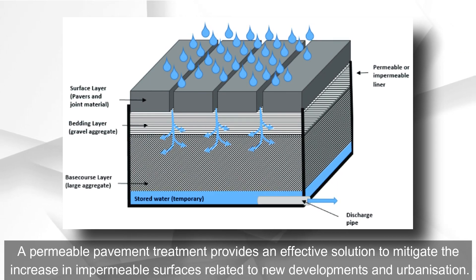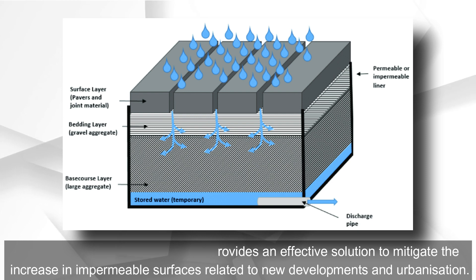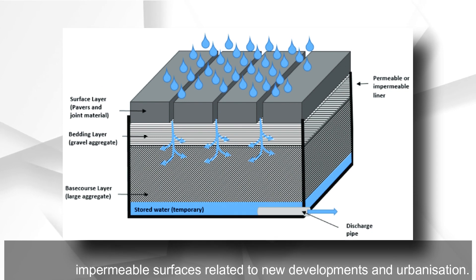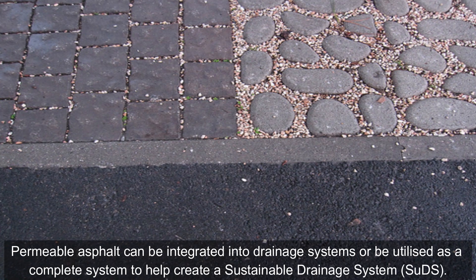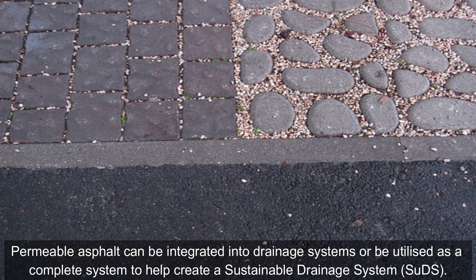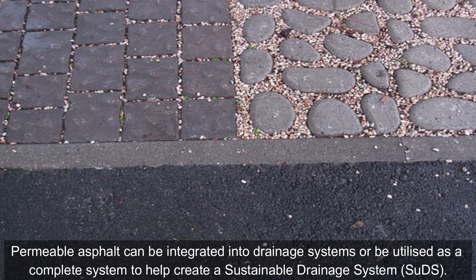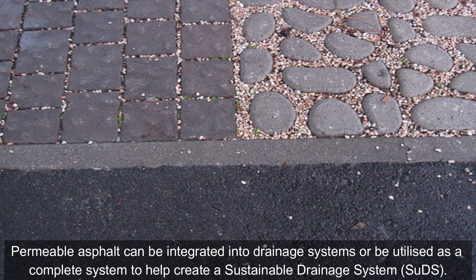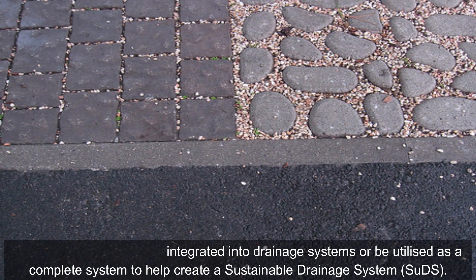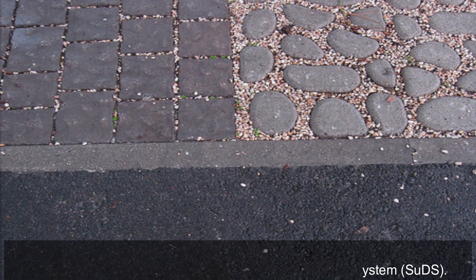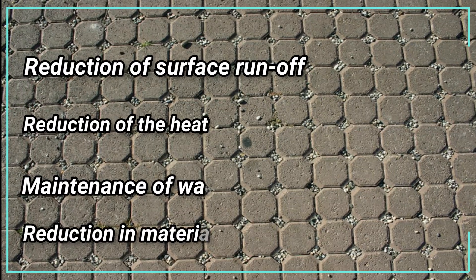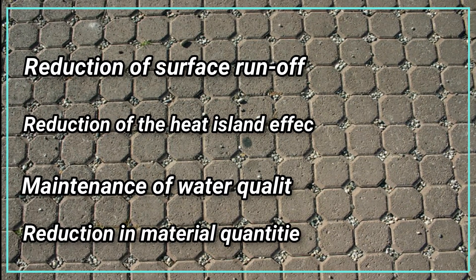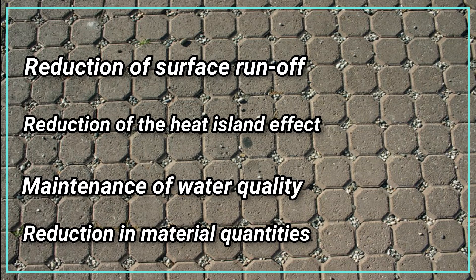Permeable pavement treatments provide an effective solution to mitigate the increase in impermeable surfaces related to new developments and urbanization. Permeable asphalt can be integrated into drainage systems or utilized as a complete SuDS system, offering benefits such as reduction of surface runoff, reduction of the heat island effect, and maintenance of water quality.